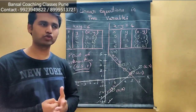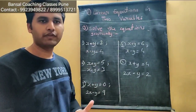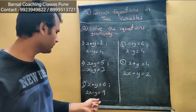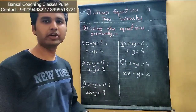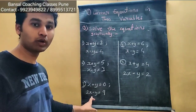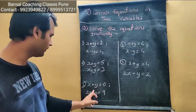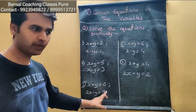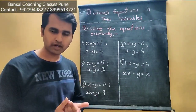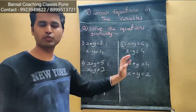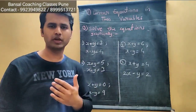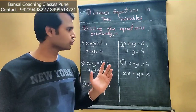Now I'll give you some sums to solve using the graphical method. For the first, second, and fourth sums, solve in the same way. For the third and fifth sums, note that there is a coefficient 2x — so if you assume x equals 1, multiply 2 by 1 to get 2. It's easiest to assume the value of x and find y. Assume a minimum of 3 values for each equation and plot them on the graph. Do this homework by today itself. Thank you.